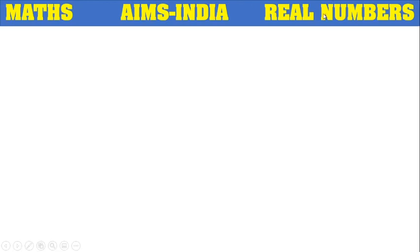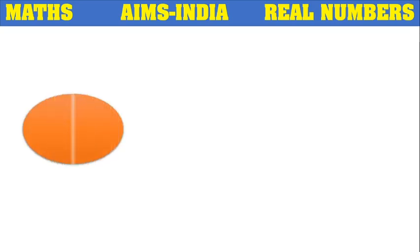Before going to learn real numbers, first of all we have to know all the previous number systems so that we can define what real numbers are. So first let's start with the counting numbers 1, 2, 3, 4, 5. The numbers starting from 1, 2, 3, 4, 5 and so on — these are all considered as natural numbers or counting numbers. The symbol for natural numbers is N.